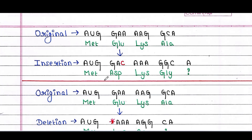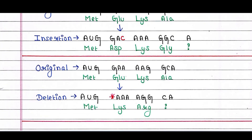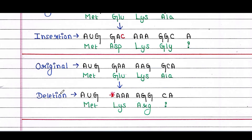You can see that the amino acid sequence is totally changed and the protein is totally different from the original. Now the example of deletion: starting from the original sequence, G is deleted. When G is deleted, the whole codon sequence changes again, the frame shifts, and the amino acid sequence is totally different from the original.